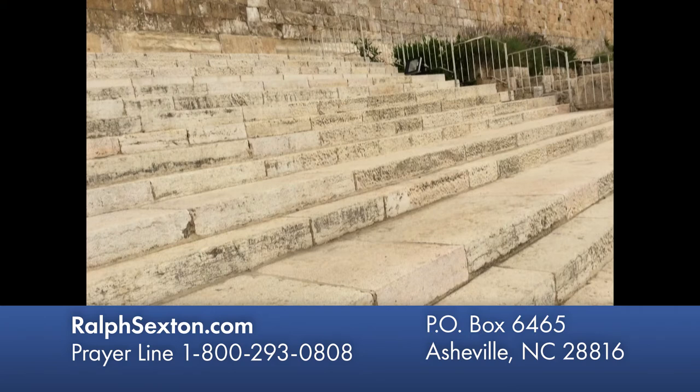Here are the southern steps. These steps go up, and you'll see where the gates are — they've blocked them in. When the Ottoman Turks were there, they blocked all this in. But notice that the steps are not even: a narrow step, a long step, an even more narrow step, a little longer step, a narrow step, and all the way up. And the reason is that if I'm going up to worship God, I don't want to be routine or callous — I'll have to think about where I'm going and watch my step.